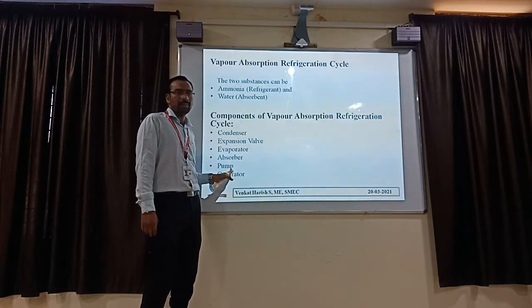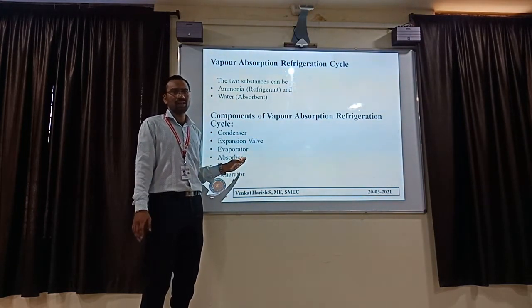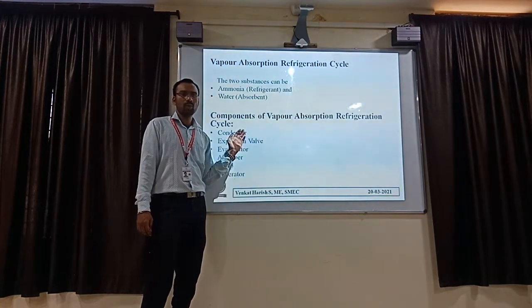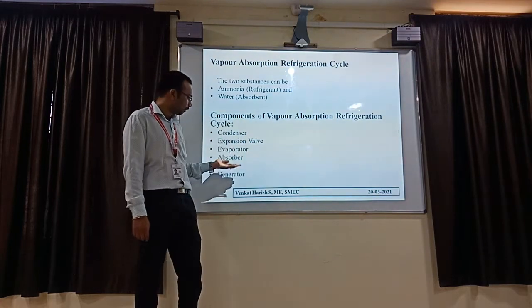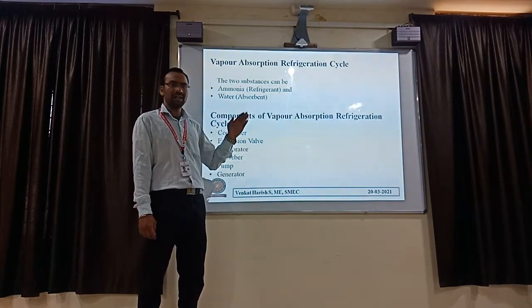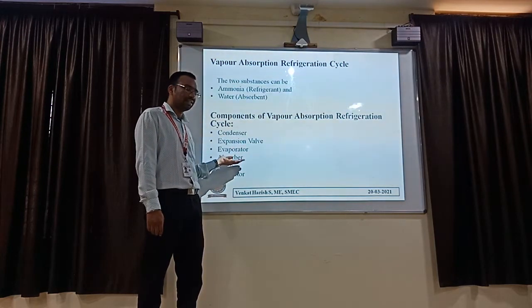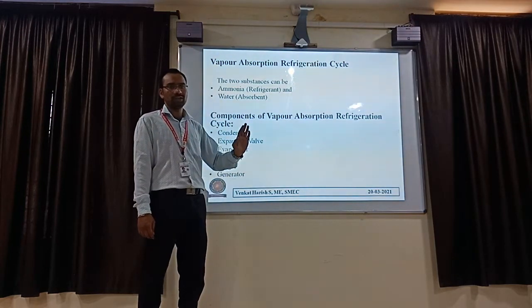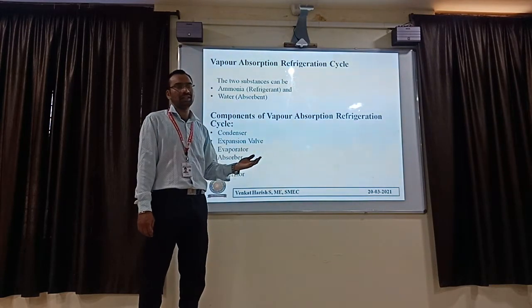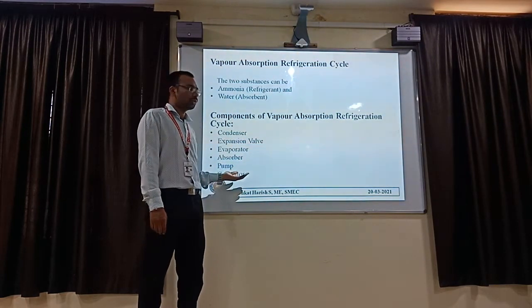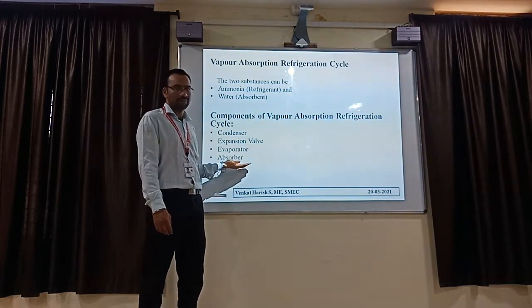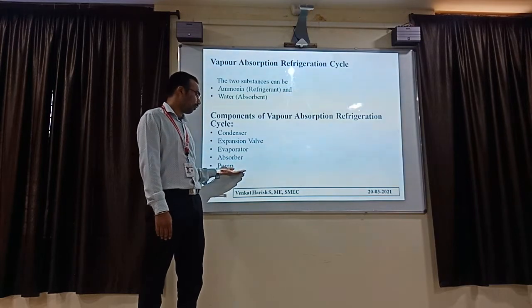Coming to the absorber — the name itself indicates it will absorb the heat. Whatever refrigerant is flowing over the circuit, the absorber will absorb the heat from the substance and deliver it outside. Finally, the pump — which is a general component used to transfer the substance from one location to another. Whether increasing or decreasing the pressure, the pump's intention is to transfer the motion of refrigerant from one location to another. The generator is the power element, used to provide power to the pump for accurate performance.